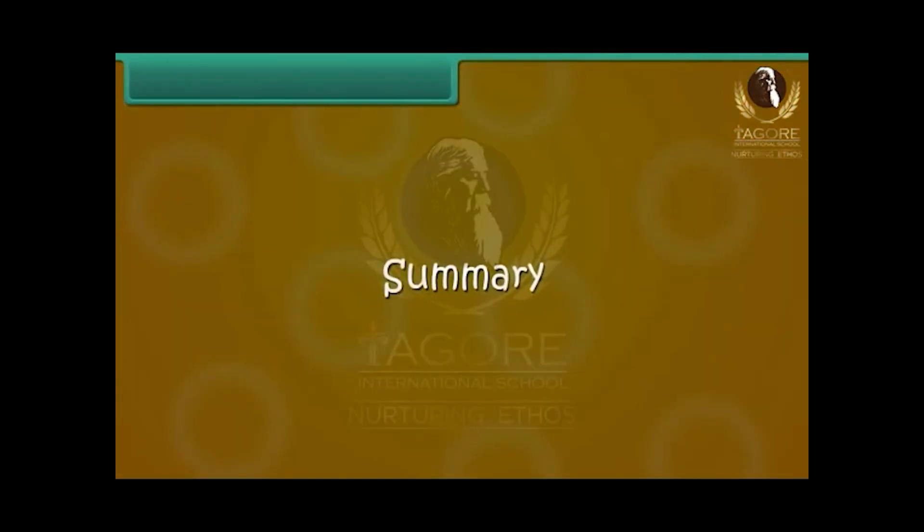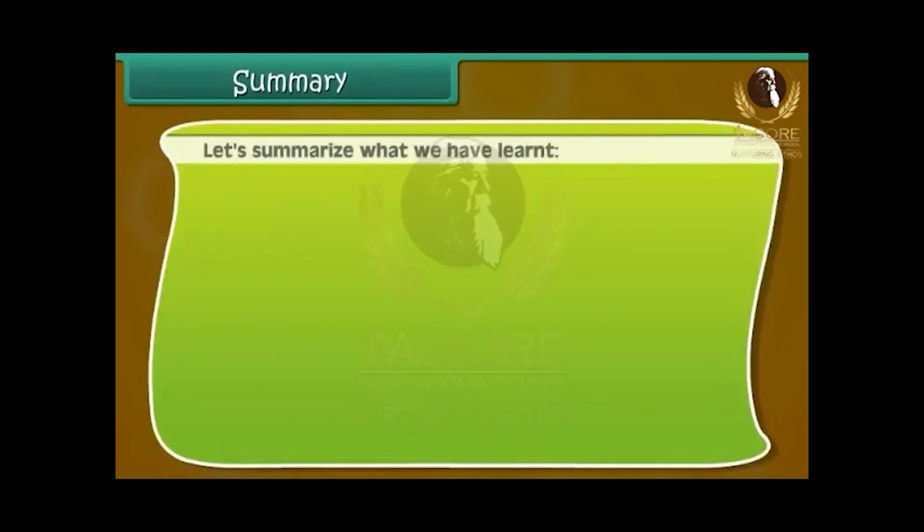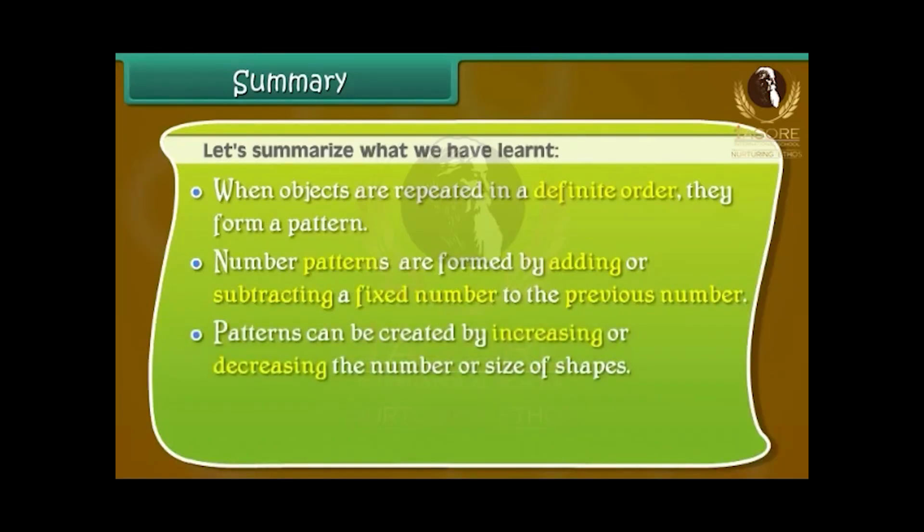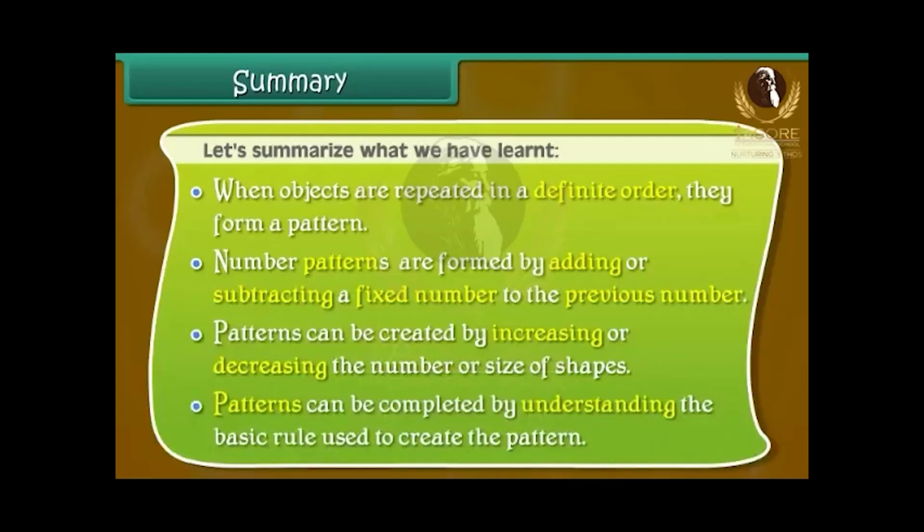Summary. Let us summarise what we have learnt. When objects are repeated in a definite order, they form a pattern. Number patterns are formed by adding or subtracting a fixed number to the previous number. Patterns can be created by increasing or decreasing the number or size of shapes. Patterns can be completed by understanding the basic rule used to create the pattern.